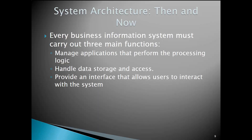System architecture then and now — every business information system must carry out three functions: manage applications, handle data storage, and provide an interface that allows users to interact with the system. If you think about everything from an email system, it does all of these things. Every system must do these things, though how it does it is another matter entirely.